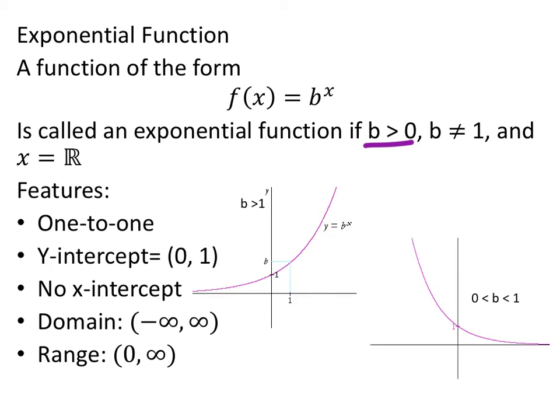Now, the features here is that it's 1 to 1, the function is 1 to 1, which means for every y value, there's one corresponding x value. And since this is a function, it actually goes the other way around, so for every x value, there's only one corresponding y value.